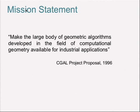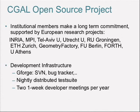The CGAL project is now 12 years old. It was originally guided by the mission statement to make a large body of geometric algorithms developed in the research field of computational geometry available for industrial applications. It is now an open source project with a few institutional members making long-term commitments, supported by European research projects. These include Inria in France, the Max Planck Institute in Germany, Tel Aviv University, Utrecht University, and a few others — in particular, Geometry Factory, a spin-off company that started in 2003, founded by Andreas.